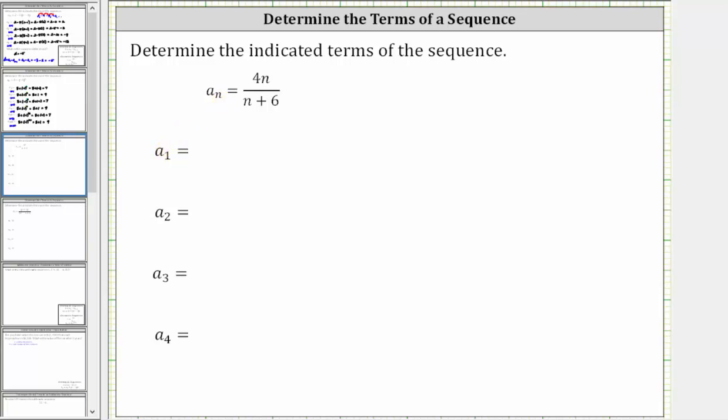To determine a_1, we know n = 1, which means we substitute 1 for n, giving us 4(1)/(1+6). Simplifying, 4 times 1 is 4, and 1 plus 6 is 7.